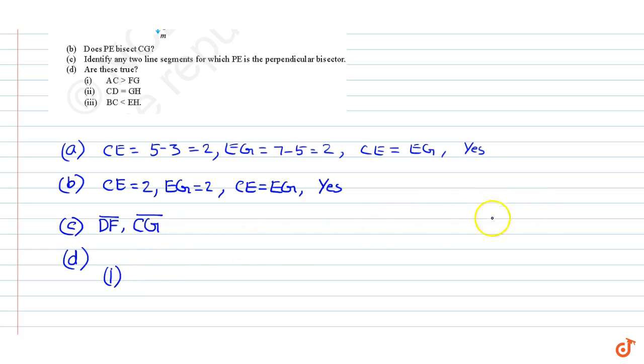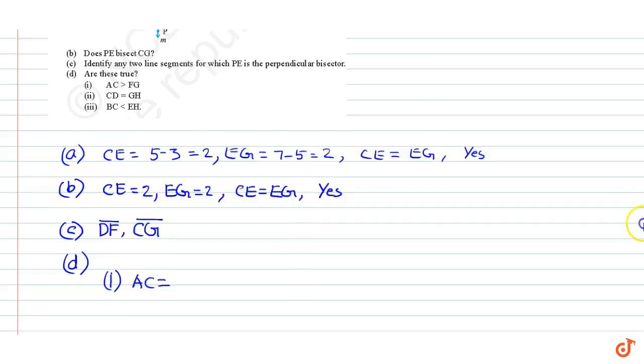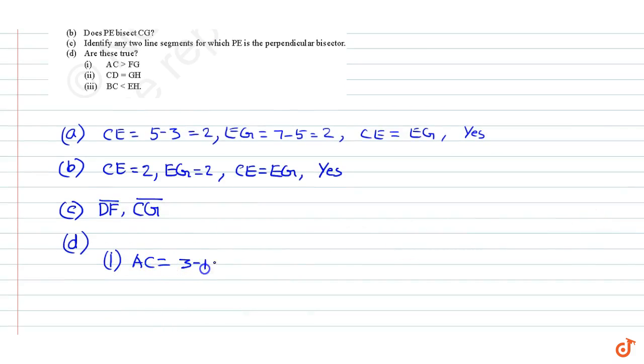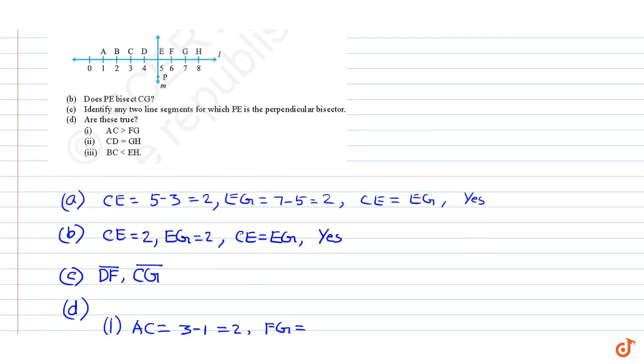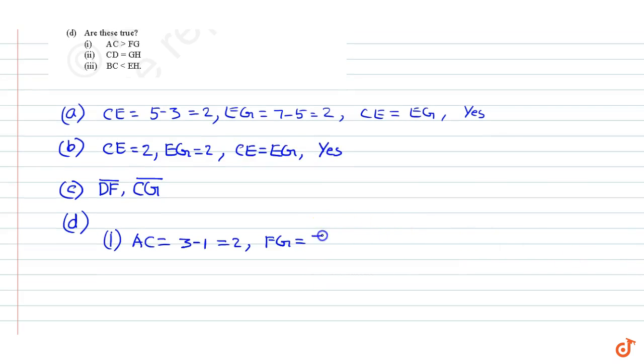AC > FG. AC = 3 - 1 = 2, and FG = 7 - 6 = 1. Therefore AC > FG. The answer is true.